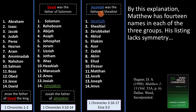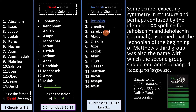To this I say: who cares about symmetry? We just resolved an error. Symmetry is really of no consequence. Nevertheless, the lack of symmetry in Matthew's original genealogy actually explains why the error crept in. Hagner explains the process: some scribe, expecting symmetry in structure and perhaps confused by the identical Septuagint spelling for Jehoiakim and Jeconiah, assumed that the Jeconiah at the beginning of Matthew's third group was also the name the second group should end with.